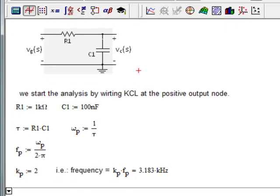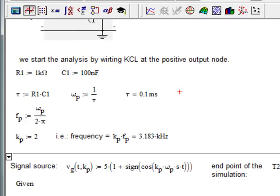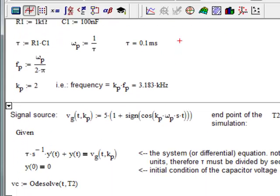And I've defined some values here. I've calculated a time constant tau, which, let's see, by the way, is 0.1 milliseconds. I've calculated the pole frequency in radians per second and in hertz, and now we come to the part that's really of interest here.